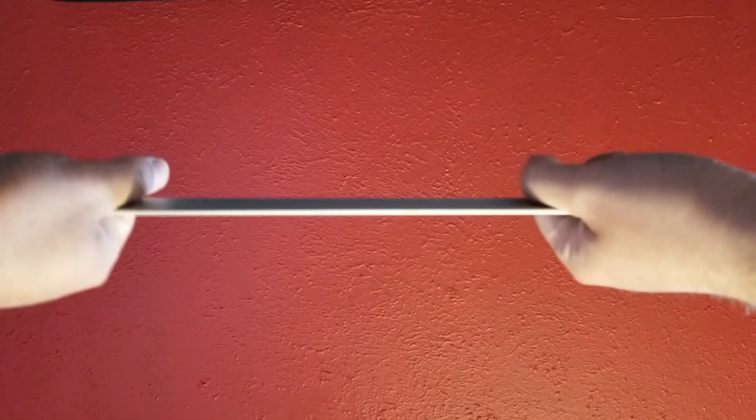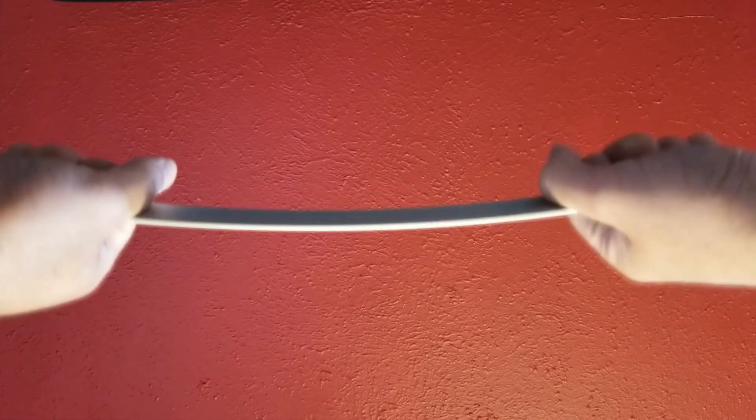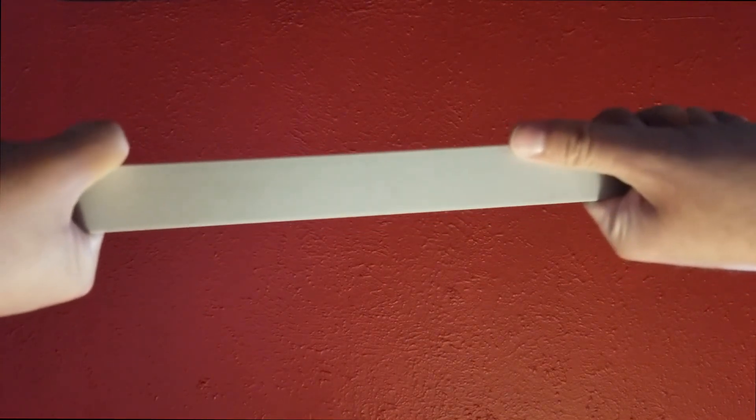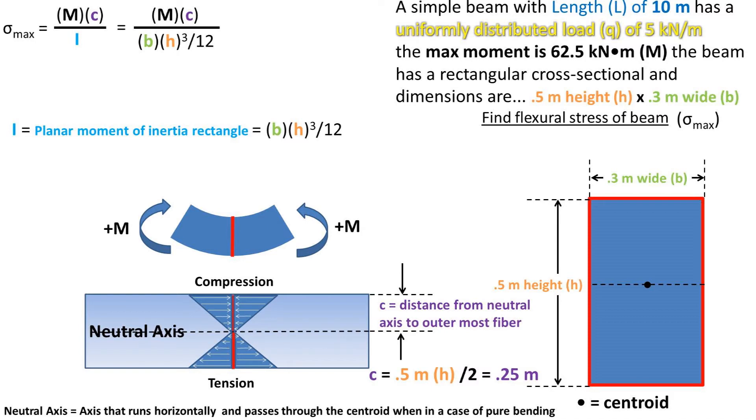To better understand the planar moment of inertia, here is a ruler example where we first apply a force down with the flat side up, then we flip it to the thin side being up and apply a force. It is much harder to get it to bend with the thin side up. We haven't changed the amount of material, only the orientation of the material. The larger the planar moment of inertia, the more rigid it becomes.